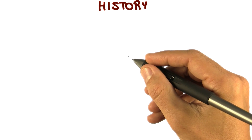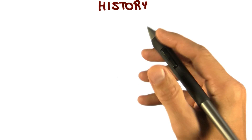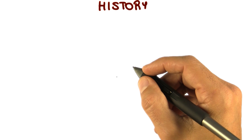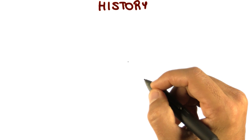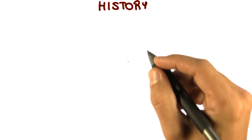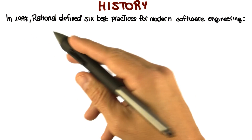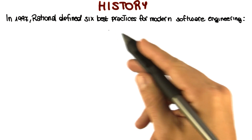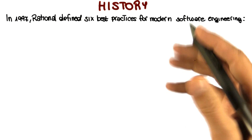Today we're going to talk about the Rational Unified Process. I like to provide a historical perspective for the topics we cover in class, and this lesson is no exception. So let's see a little bit of history of RUP. To do that, we have to go back to 1997 when Rational defined six best practices for modern software engineering.